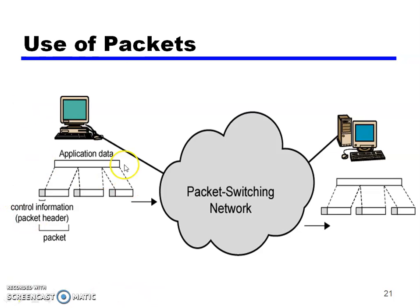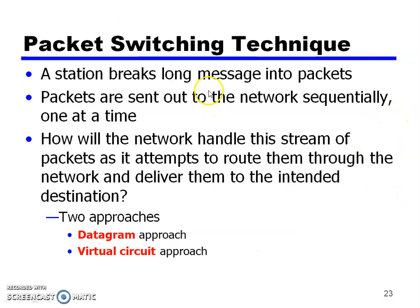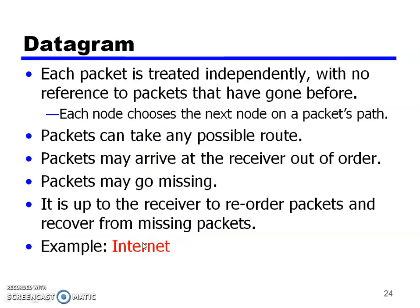To illustrate the use of packets: there is a machine A and machine B. The data to be sent is divided into small parts — packet 1, packet 2 — and each packet has a source and destination address appended to it as a header along with the main data payload. A station breaks a long message into packets, and packets are sent out to the network sequentially. There are two types of packet switching: datagram and virtual circuit.